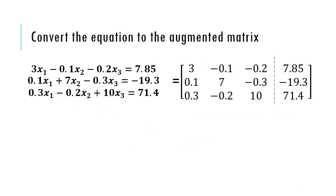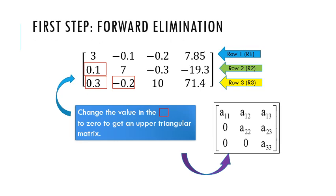First, we need to convert the equation into an augmented matrix. Here are the 3 equations represented in the augmented matrix. The first equation is named as R1, the second equation is R2, and the third equation we call it as R3.